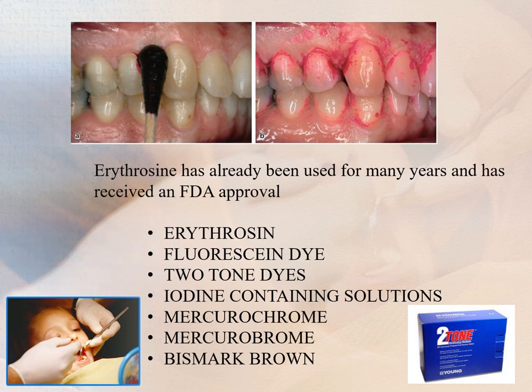Disclosing agents are solutions or wafers capable of staining bacterial deposits on the surfaces of teeth, tongue, and gingiva. Solutions are applied as concentrates on cotton swabs or diluted as rinses. Commercially available types include erythrosine, fluorescein dye, two-tone dyes, iodine-containing solutions, and bismark brown. They are excellent oral hygiene aids because they provide the patient with an educational and motivational tool to improve the efficiency of plaque control procedures.